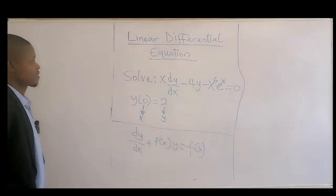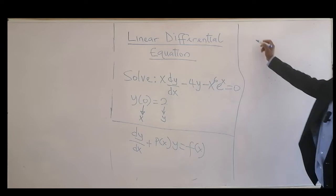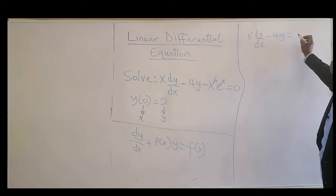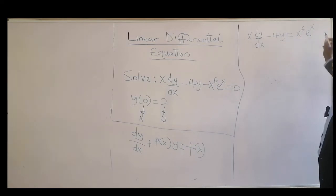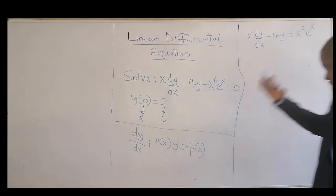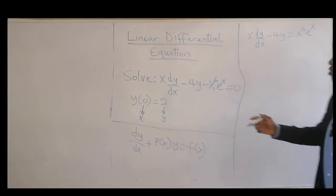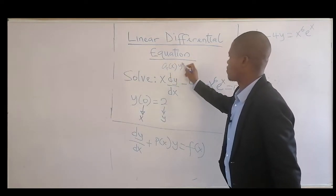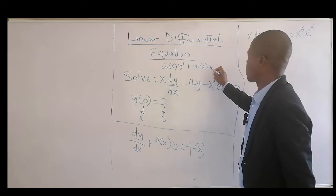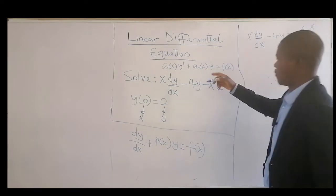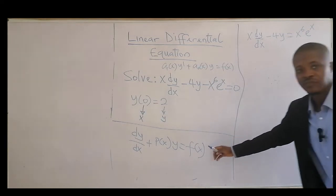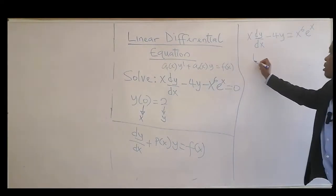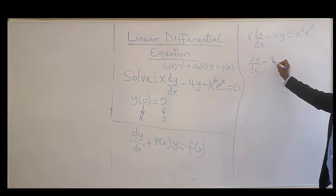Let's check — we can move terms to the other side. We have x(dy/dx) minus 4y. Move it to the other side, then divide through. The equation is of the form a₁y' + a₀y = f, so we divide through by the coefficient attached to y.